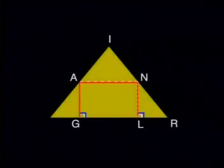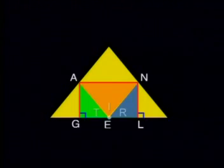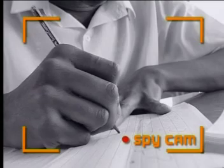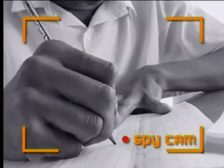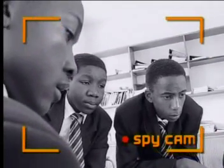Sharon, how did you do today? I did pretty well. I think I learned a lot. Now I can prove that the sum of the angles of any triangle is 180 degrees. I can also plan and write a paragraph proof, and I can participate in an investigation.